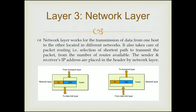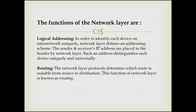The third layer is the Network layer. The Network layer works for the transmission of data from one host to another located in different networks. It also takes care of packet routing — selection of the shortest path to transmit the packet from the number of routers available. The sender and receiver IP addresses are placed in the header by the Network layer. Responsibilities include logical addressing and routing. When independent networks or links are connected to create an inter-network or a large network, the connecting devices route or switch the packets to the final destination.